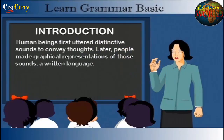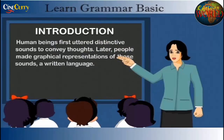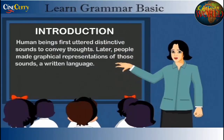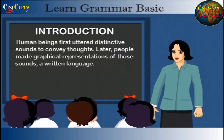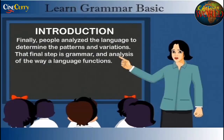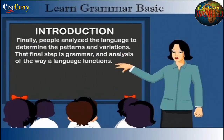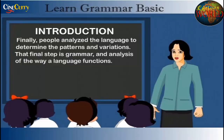Human beings first uttered distinctive sounds to convey thoughts. Later, people made graphical representations of those sounds — a written language. Finally, people analysed the language to determine the patterns and variations. That final step is grammar: an analysis of the way a language functions.